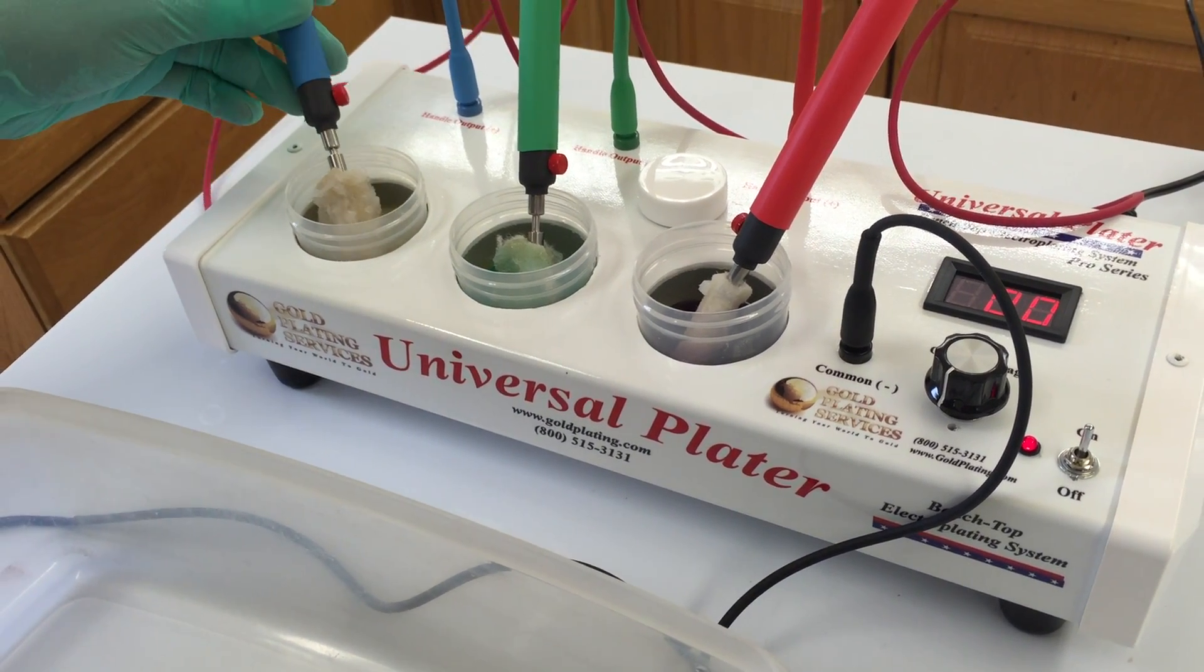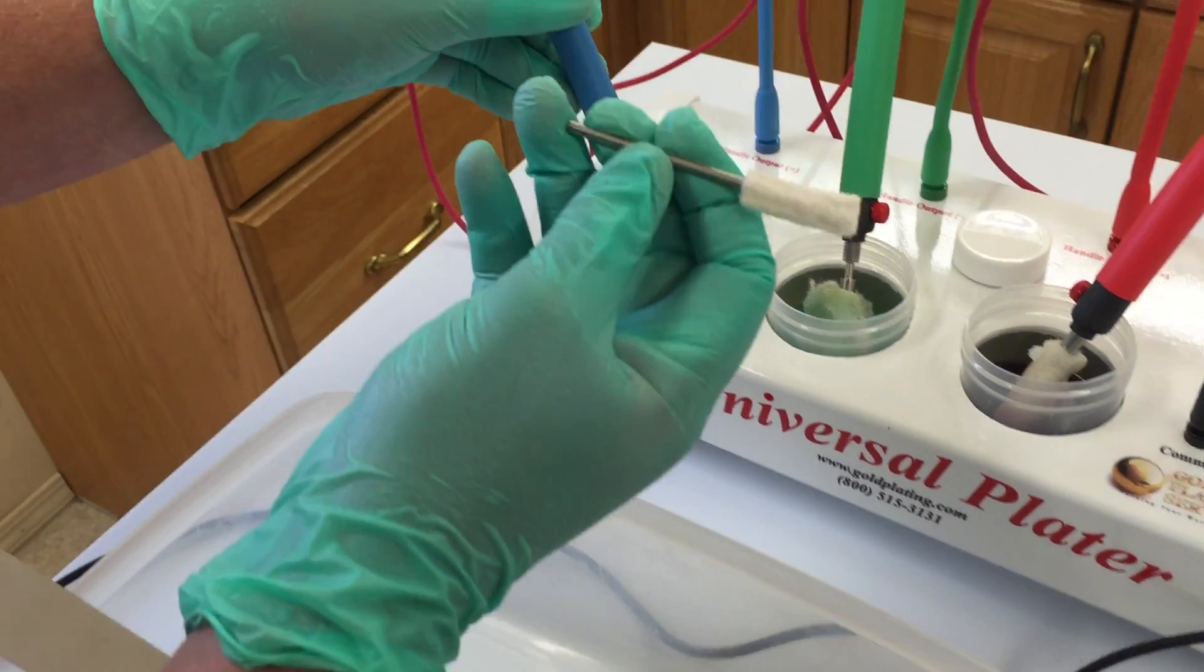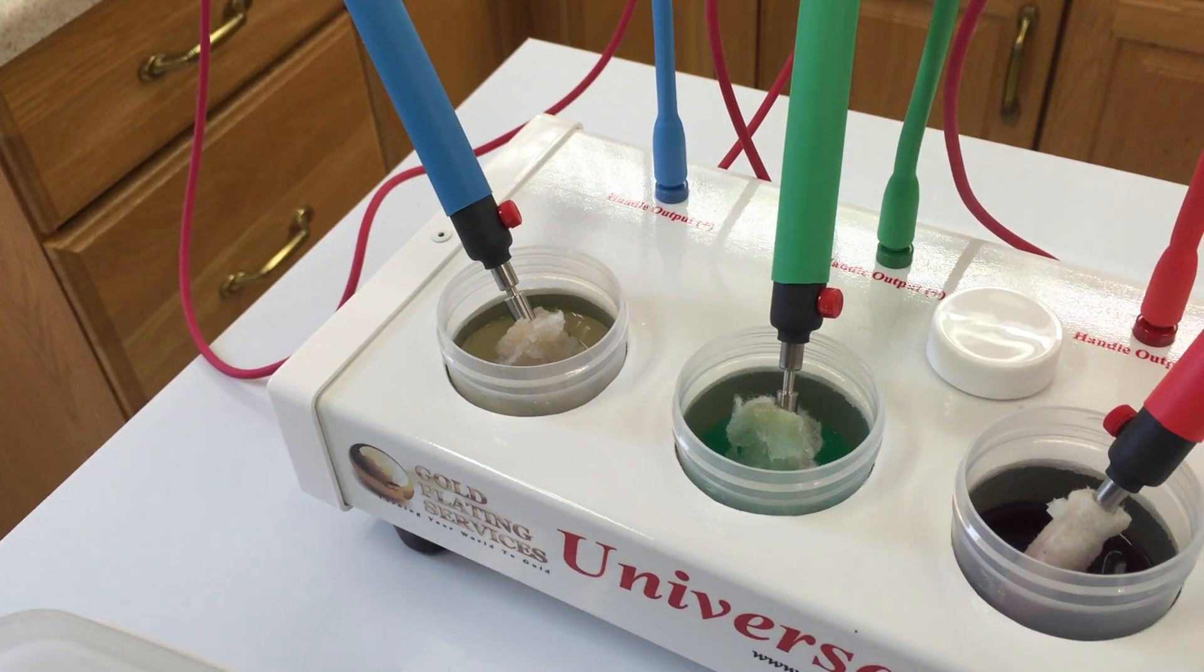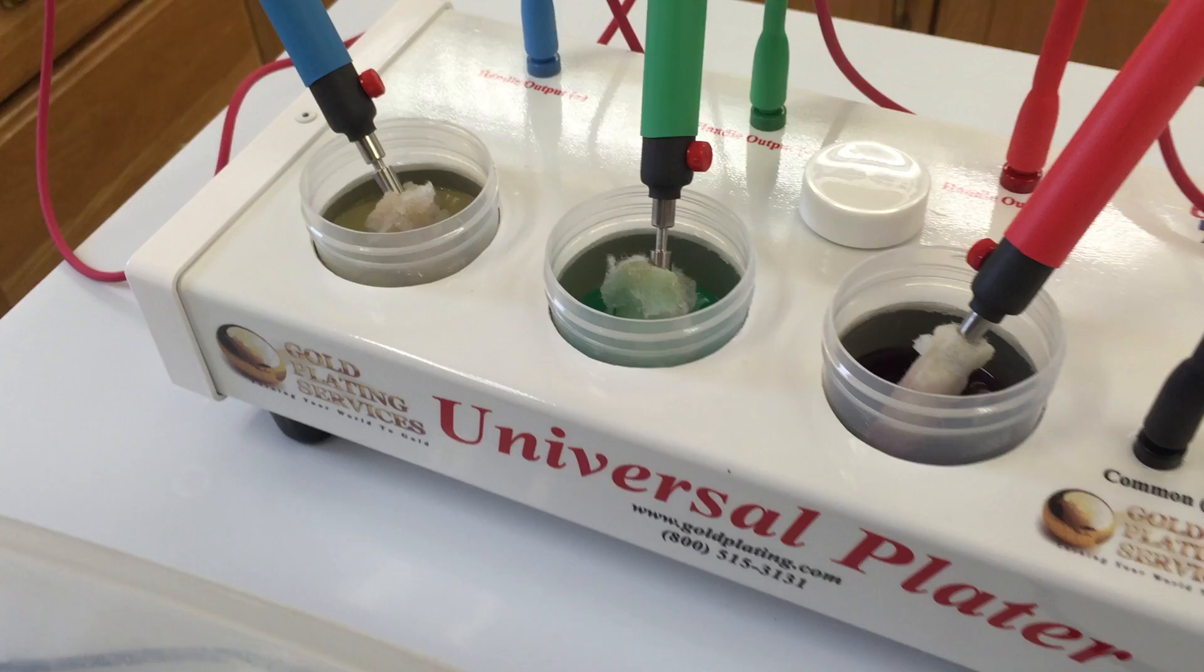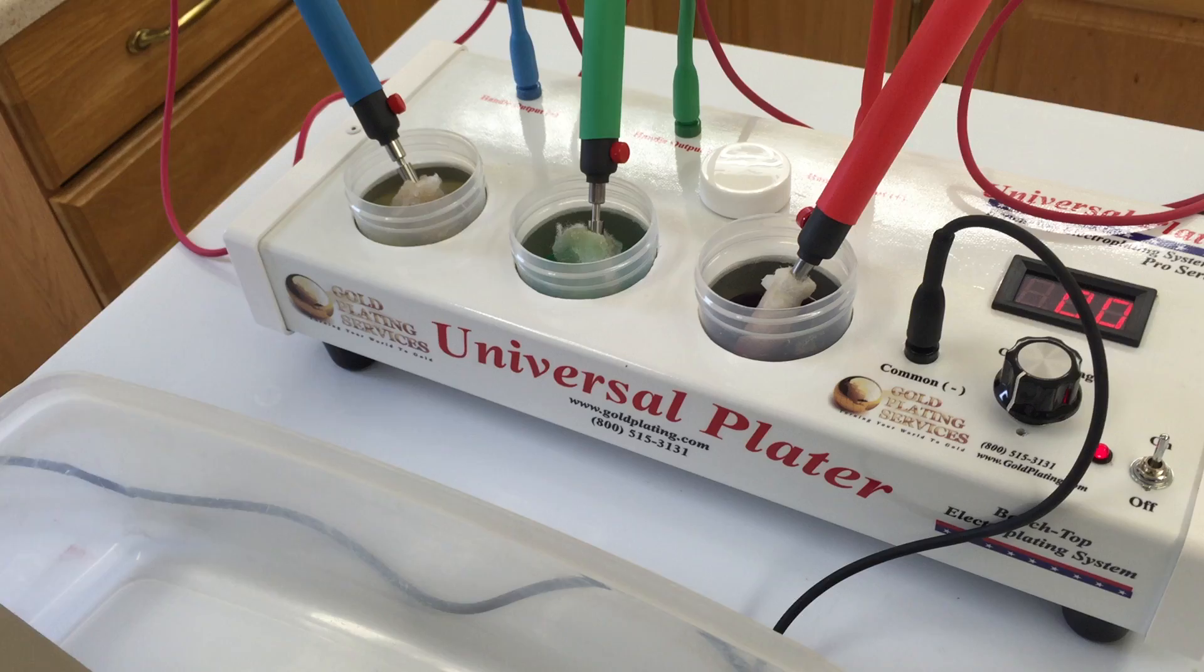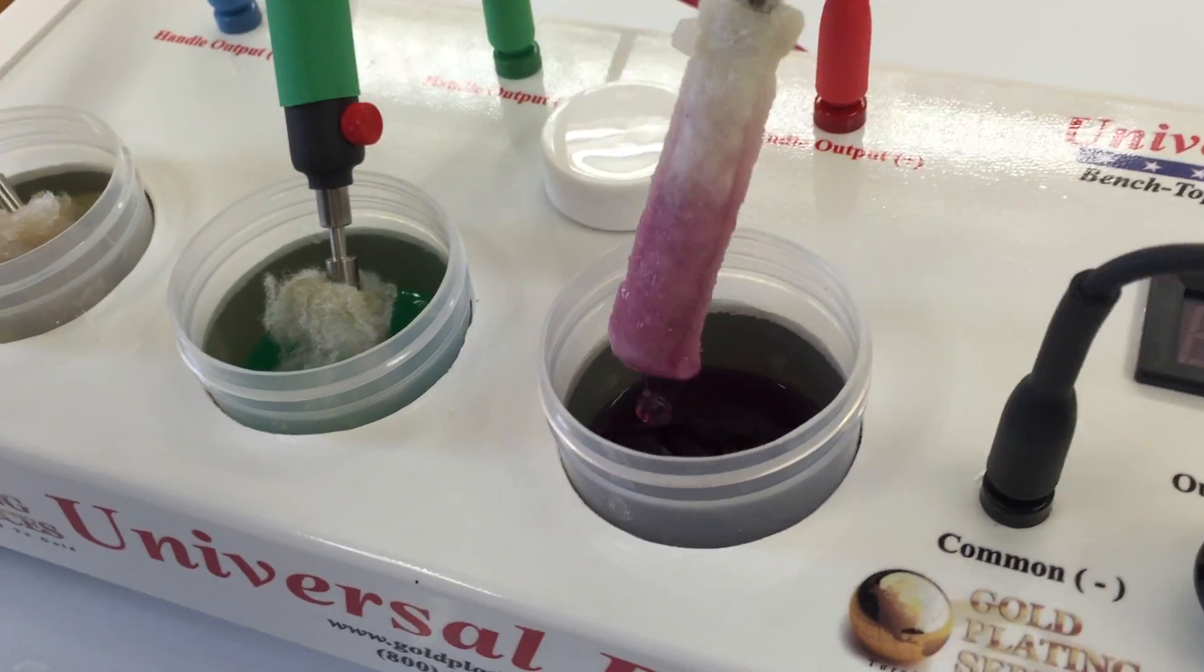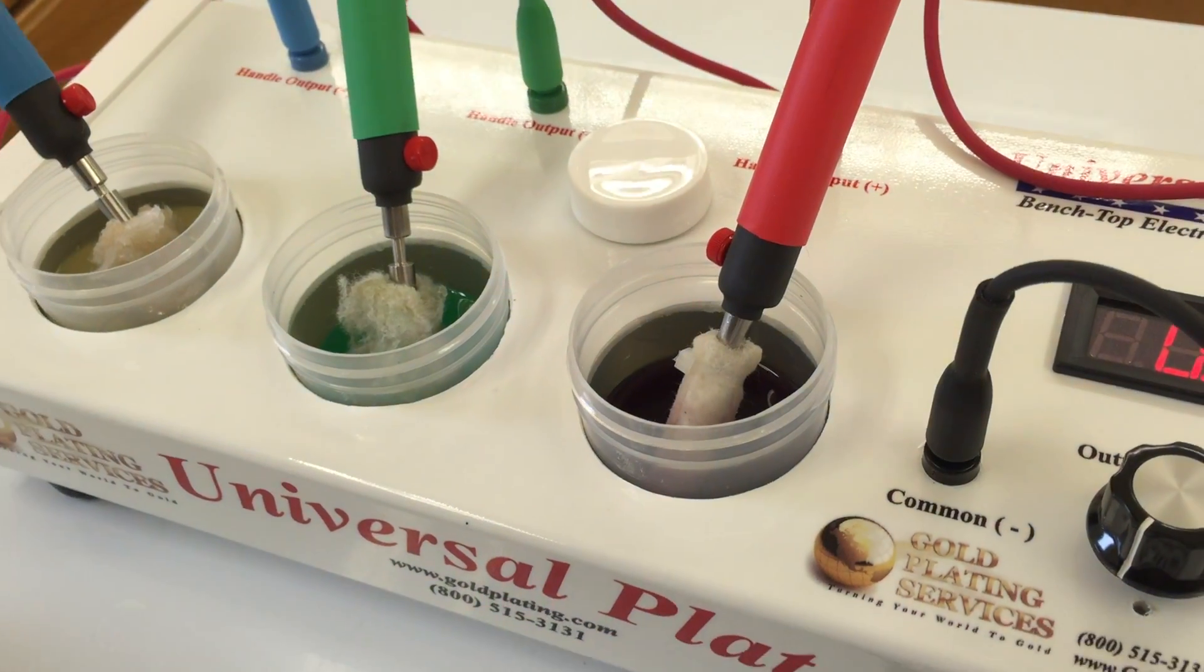We do have it set up with the larger conversion bit, which goes from this little eighth inch to a bigger size, so that we can have the bigger sleeves. The purpose is to carry more solution as we're going to be doing a larger item, and also it just helps with doing ElectroClean and Woods sometimes to have a bigger sleeve carry more solution. So we have that on our Woods Nickel Strike as well. And then our gold, we just have the standard quarter inch gold sleeve on a conversion bit.